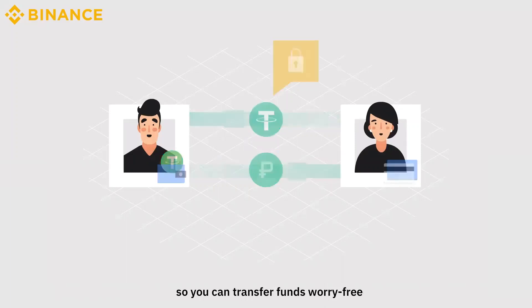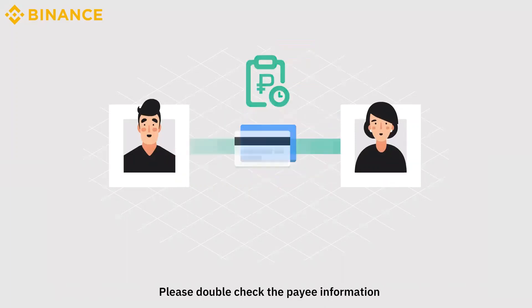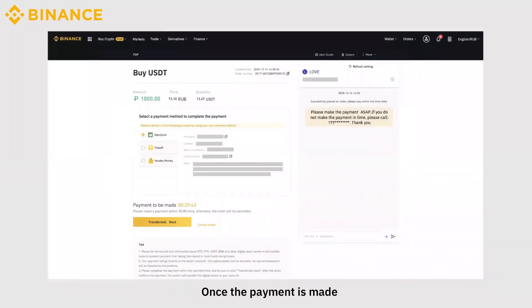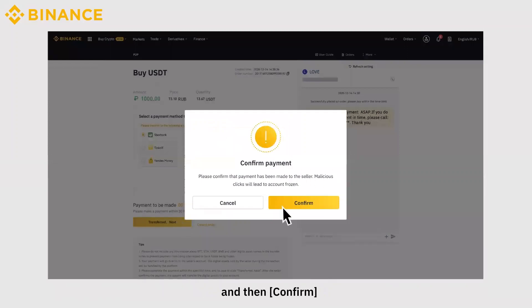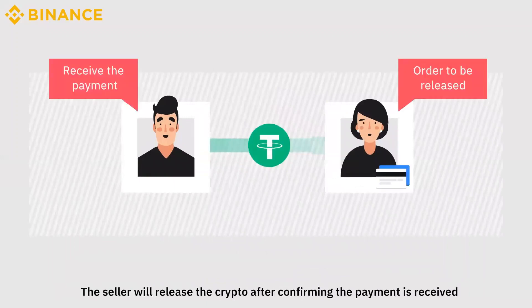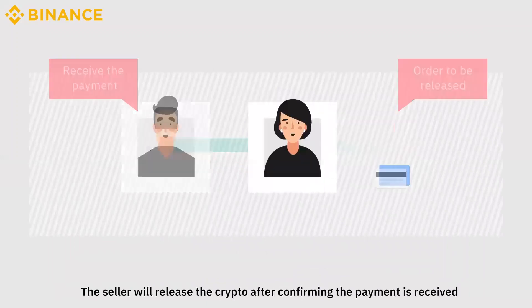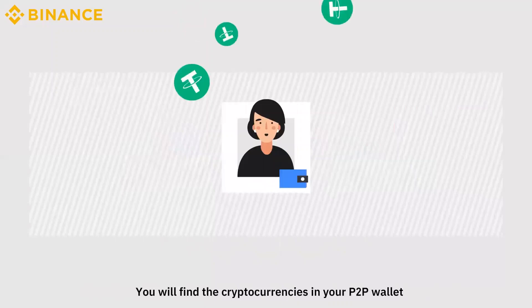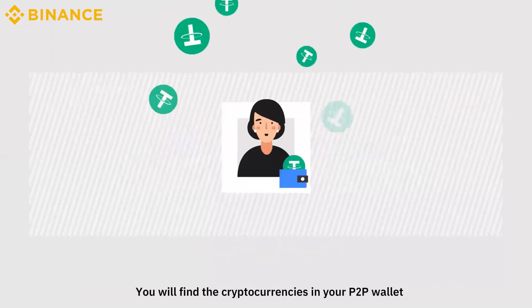Please double-check the payee information and complete the transaction within the time limit. Once the payment is made, click on Transferred Next and then Confirm and the status will be updated to To Be Released. The seller will release the crypto after confirming the payment is received. The transaction will be completed. You will find the cryptocurrencies in your P2P wallet.